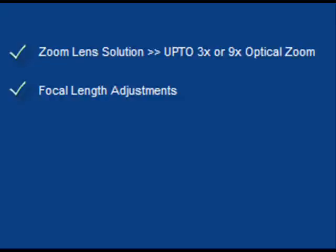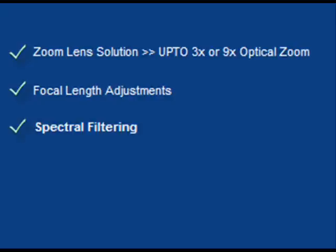Number two: some customers need a fixed lens but require a focal length adjustment. They may need a 2.5 cm object distance, and some even need a 10-meter object distance — this again requires lens adjustments. Number three: there might be a need for spectral filtering, like IR filter removal or adding an IR filter.